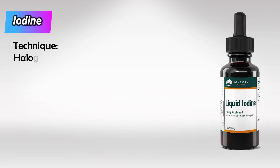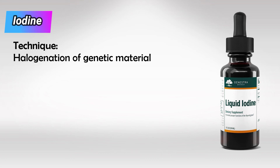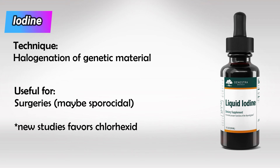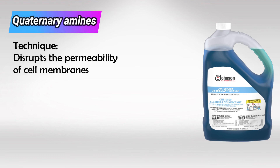Next we have iodine and its derivative products. It halogenizes genetic materials and proteins, adding a halogen atom to their structure, causing disruption of the genome and denaturation of proteins. Its sporicidal activity is not well understood. It's very commonly used in surgeries to clean wounds; however, new studies are favoring the use of chlorhexidine and alcohol instead.